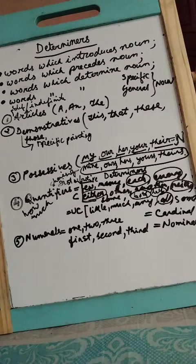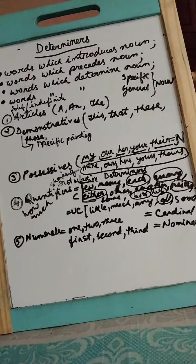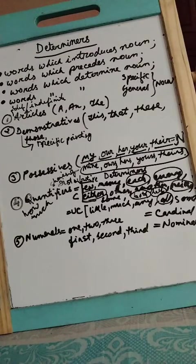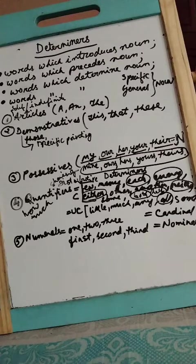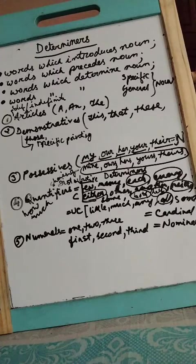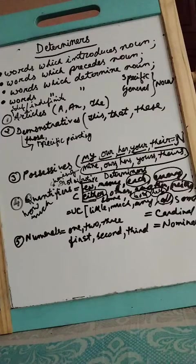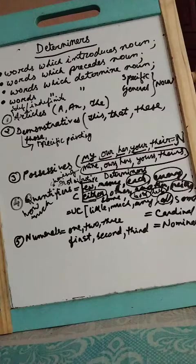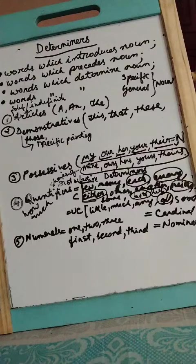Last one: numerals determiners. Cardinal and ordinal. What are cardinal numbers? One, two, three, four, five, six, seven, eight, nine, ten - cardinal numbers. For example, there are two books. Ordinal numbers: first, second, third, fourth, fifth, sixth, seventh, eighth, ninth, tenth, eleventh.